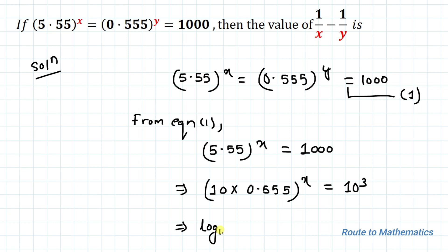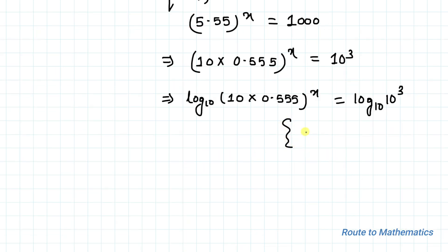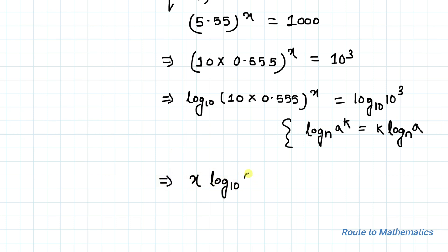In the next step, taking log base 10 on both sides, we have log base 10 of (10 × 0.555) to the power x equals log base 10 of 10 to the power 3. We apply the logarithm power rule: log base n of a^k equals k times log base n of a. So x times log base 10 of (10 × 0.555) equals 3 log base 10 of 10.